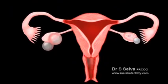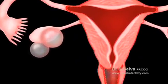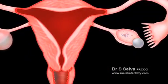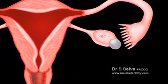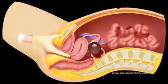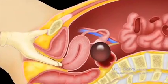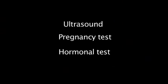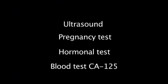As most ovarian cysts cause no symptoms, many cysts are diagnosed by chance. It may be diagnosed during a routine examination or when an ultrasound is done for other reasons. If a patient has symptoms suggestive of an ovarian cyst, an abdominal and vaginal examination may be done. The doctor may feel an abnormal swelling which may be a cyst. Tests that may be done are ultrasound, pregnancy test, hormonal test, blood test, and CA-125.